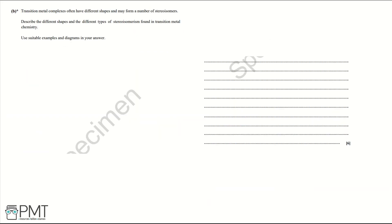Part B: transition metal complexes often have different shapes and may form a number of stereoisomers. Describe the different shapes and the different types of stereoisomerism found in transition metal chemistry. Use suitable examples and diagrams in your answer.